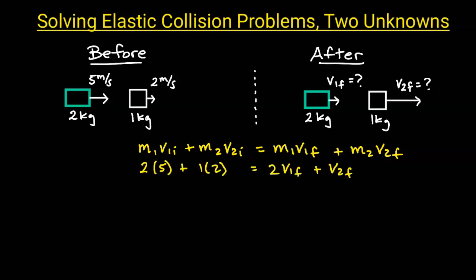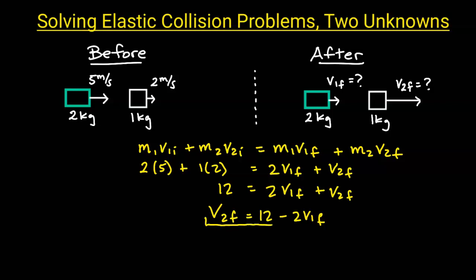We'll substitute the mass and velocity into the conservation of momentum equation and solve for v2_final. On the left hand side we have 2 times 5 which is 10, plus 2 times 1 which is 2, giving us 12. On the right we have 2*v1_final plus v2_final. Solving for v2_final: v2_final equals 12 minus 2*v1_final. We'll bracket this because we're going to come back and use this equation later.